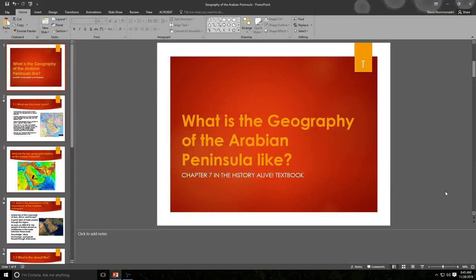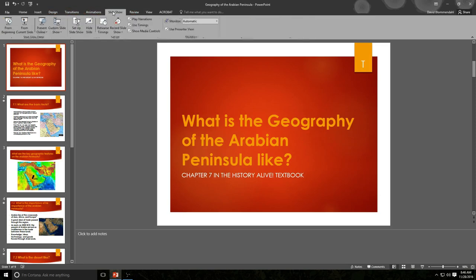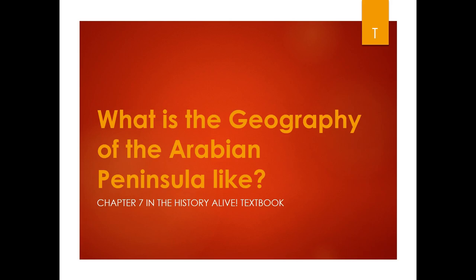Hello ladies and gentlemen, and welcome to yet another lesson in seventh grade social studies. We are now moving on to our unit about Arabia, the Middle East, Southwest Asia. It's known by many different titles, and today our essential question is going to be: what is the geography of the Arabian Peninsula like? This dovetails almost exactly with what you would find in chapter seven of your History Alive textbook.